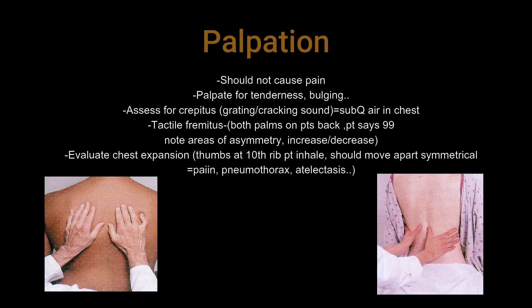Another thing you want to do is evaluate for chest expansion. As you see in the right picture on the bottom, you're going to put your thumbs at the 10th rib. Tell the patient to inhale and your thumbs should move apart symmetrically. Same thing on exhale — they both should move symmetrically, and there should be no pain in the area. If one side is not moving symmetrically, it could indicate atelectasis or pneumothorax.